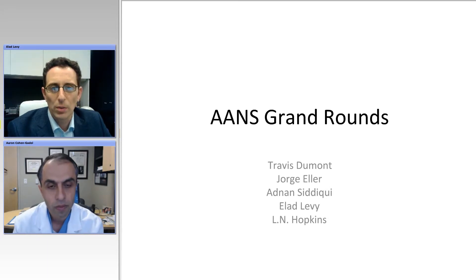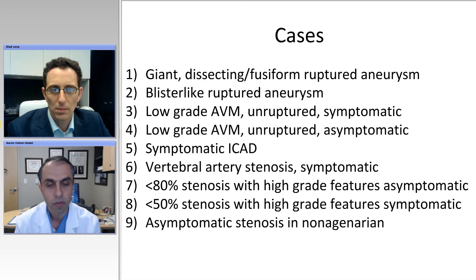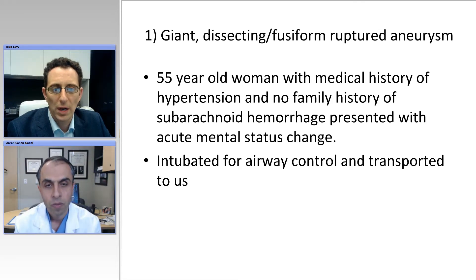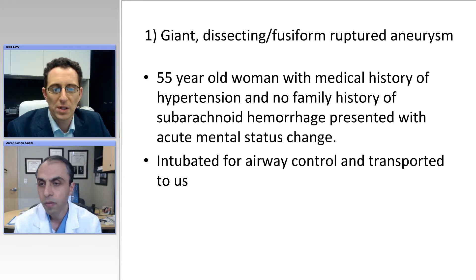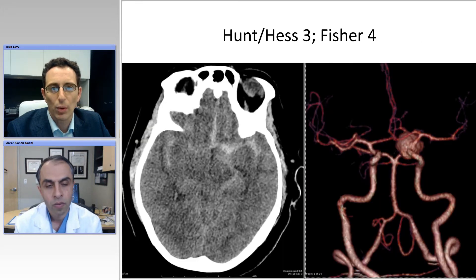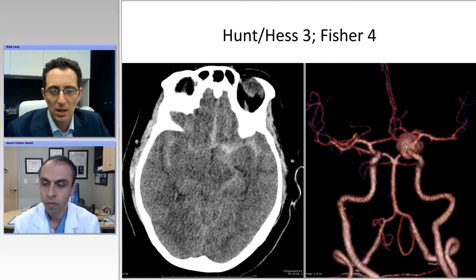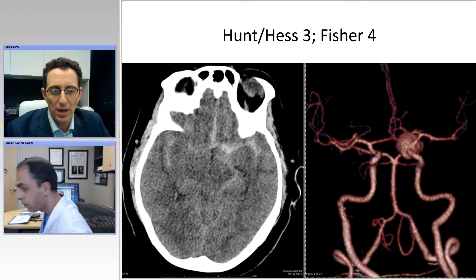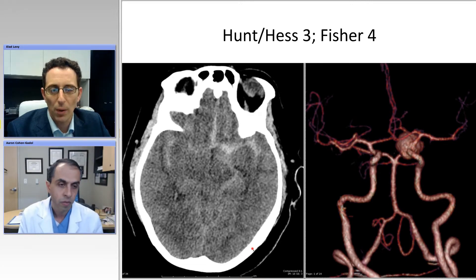We'll get right into it and start with the first case. The first case is of a giant dissecting fusiform aneurysm. This is a 55-year-old lady with a medical history of hypertension who had no family history of subarachnoid hemorrhage but presented to our facility intubated after a subarachnoid hemorrhage. She was Hunt-Hess III, Fischer IV. Here you can see her CAT scan showing the blood pattern, as well as the CT angiogram, which we routinely get once we see a subarachnoid hemorrhage pattern, demonstrating what appears to be a carotid type of blowout or a fusiform enlargement of this aneurysm.